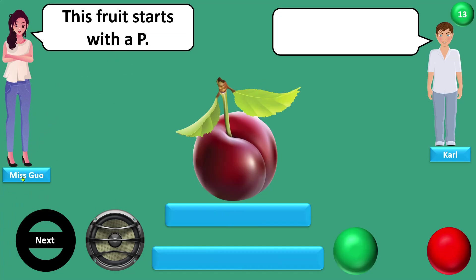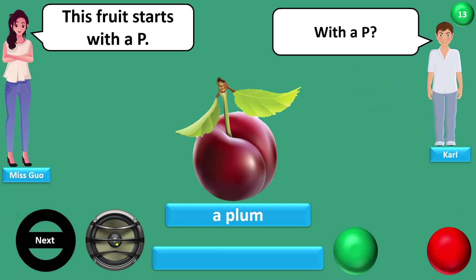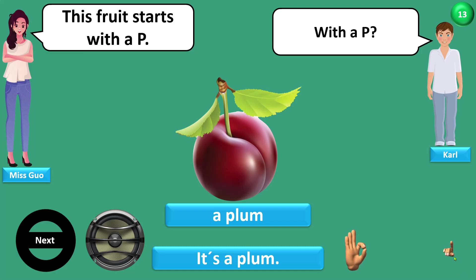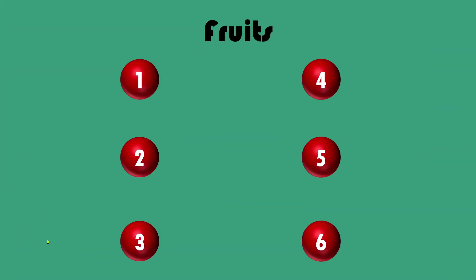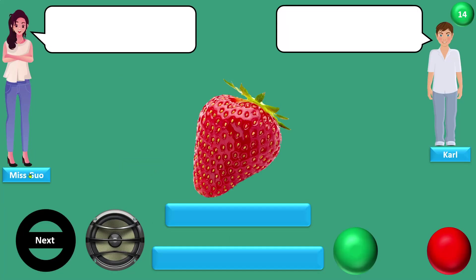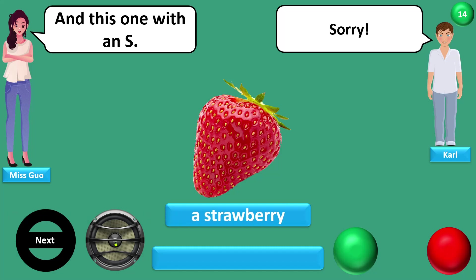This fruit starts with a P. With a P? A plum. It's a plum. And this one with an S. Sorry. A strawberry. It's a strawberry.